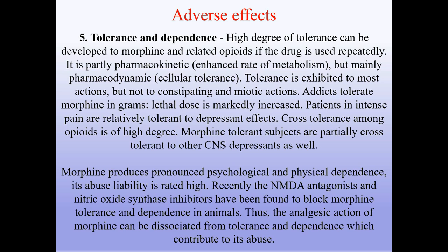Tolerance and dependence: a high degree of tolerance can develop to morphine and related opioids with repeated use. It is partly pharmacokinetic (enhanced metabolism) but mainly pharmacodynamic (cellular tolerance). Tolerance develops to most actions but not to constipating and miotic actions. Addicts tolerate morphine in grams; lethal dose is markedly increased. Cross-tolerance among opioids is of high degree. Morphine produces pronounced psychological and physical dependence; its abuse liability is rated high. NMDA receptor antagonists and nitric oxide synthase inhibitors have been found to block morphine tolerance and dependence in animals, suggesting the analgesic action can be dissociated from tolerance and dependence.